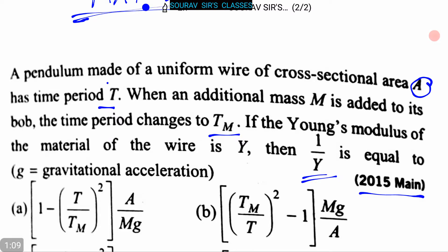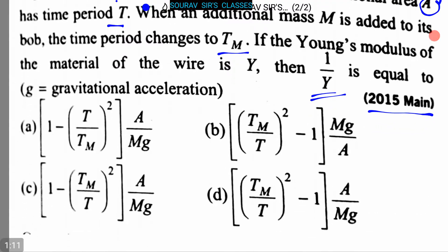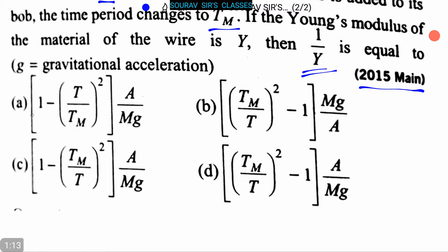Four options are given. Option A: 1 minus T by TM whole square into A by MG. Option B: TM by T whole square minus 1 into MG by A. Option C: 1 minus TM by T whole square into A by MG.